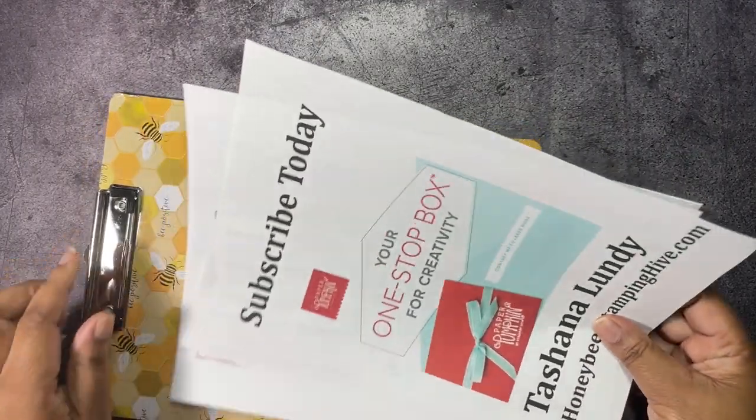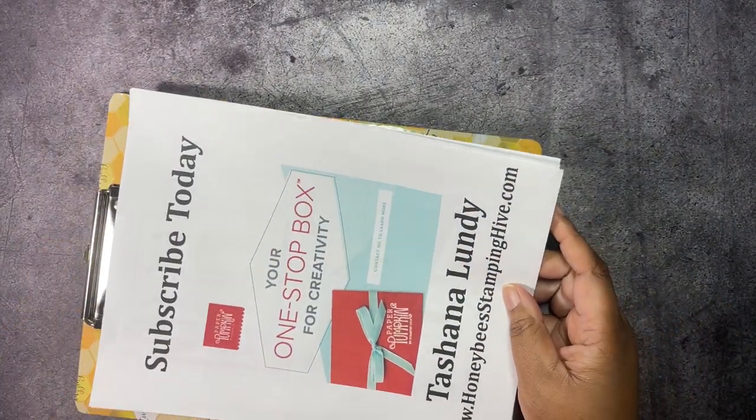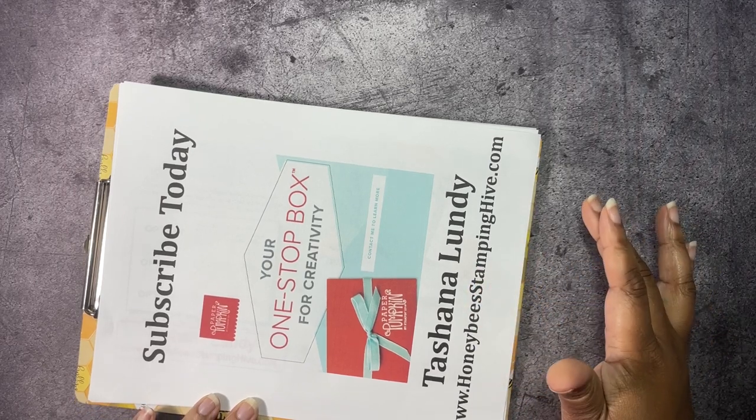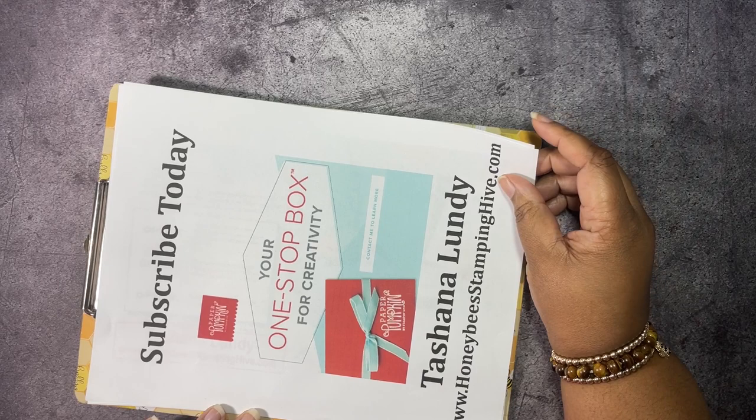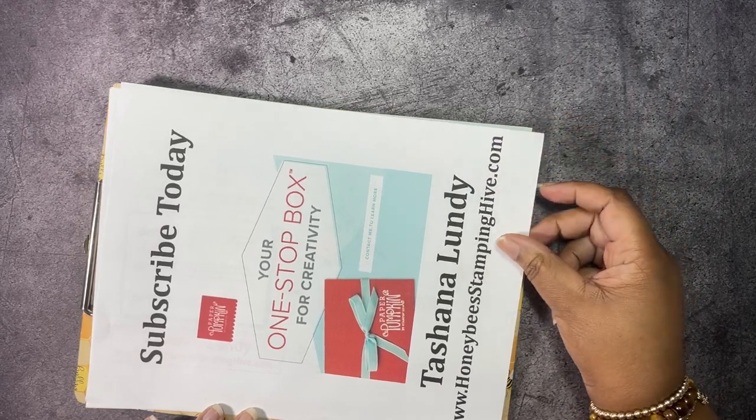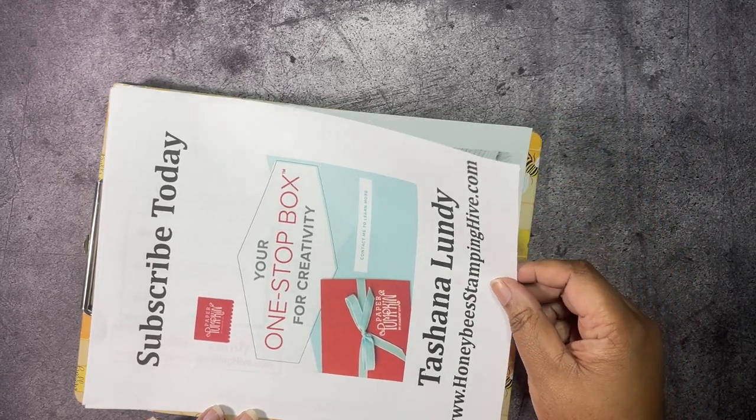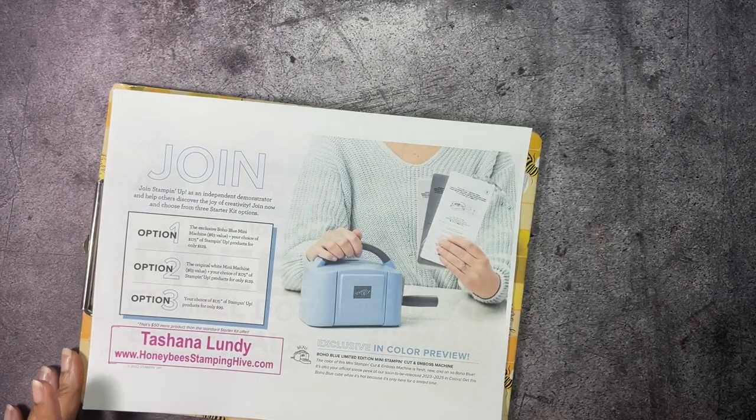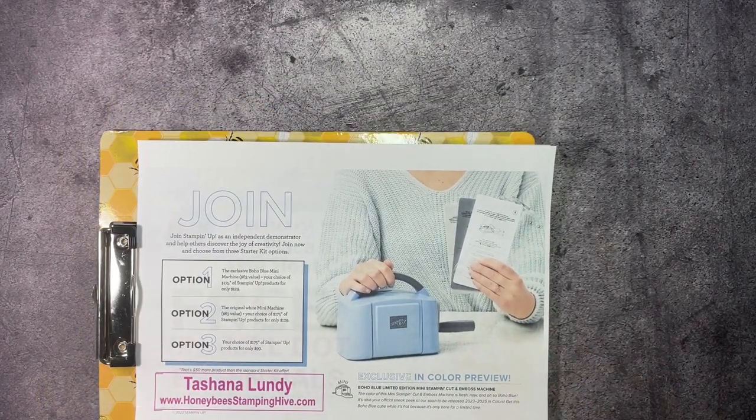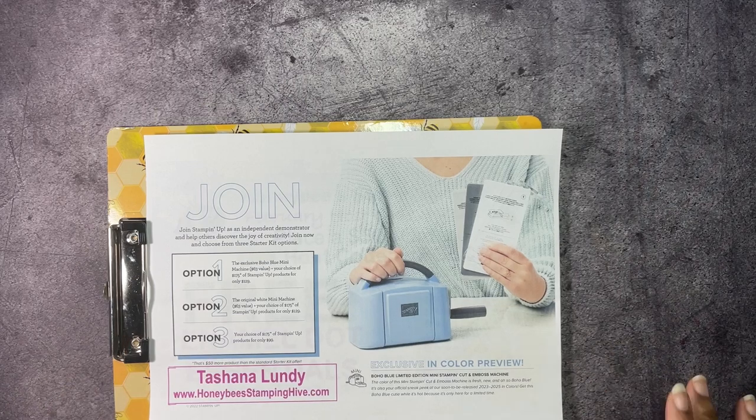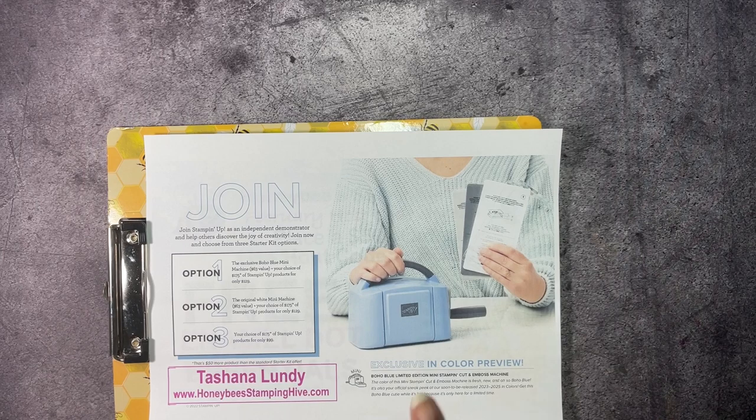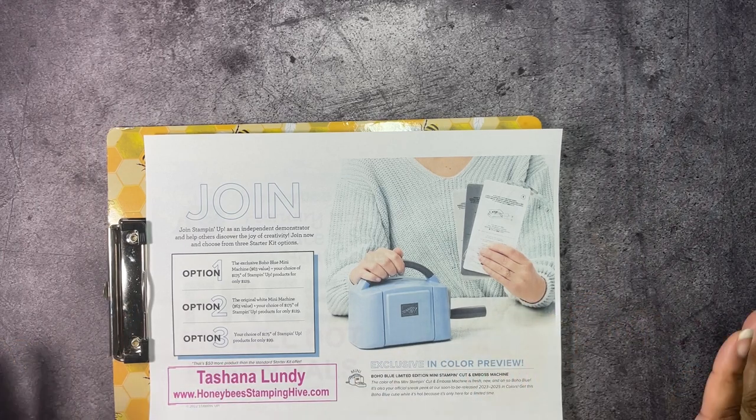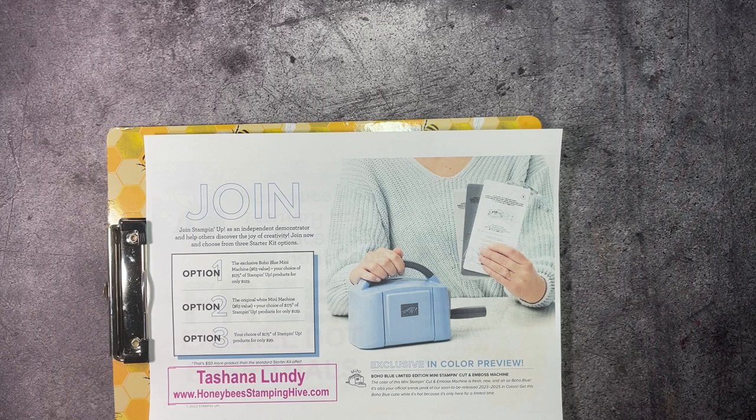Before we get started, we have to go over the buzzworthy business of the day. We have our Paper Pumpkin kit that you can always subscribe to. You have till the 10th of each month to subscribe to get that particular kit. There is a link in the description box below. Next up we have our join special. It is Sale-A-Bration time, and during Sale-A-Bration you can earn free products with a qualifying order as well as get a special when you join Stampin' Up and be a member of Honeybee Stamping Hive.